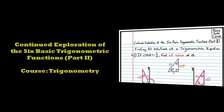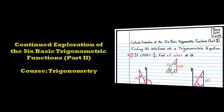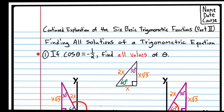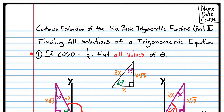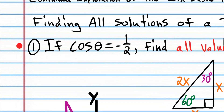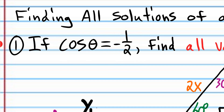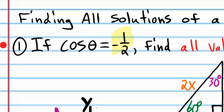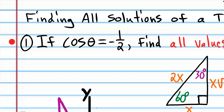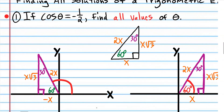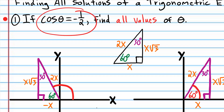This is my trigonometry course. Today we're going to continue to explore the six basic trigonometric functions. If you haven't done the homework from the last class, do that homework before watching this video. In the previous class, you were given a ratio that a trigonometric function is equal to and you were asked to find the measure of the angle that that ratio corresponds to.